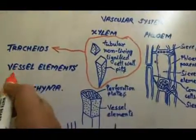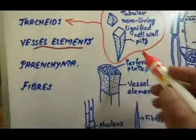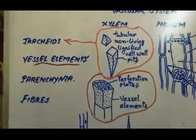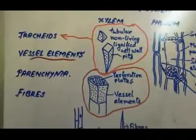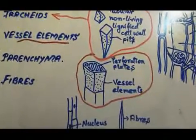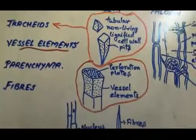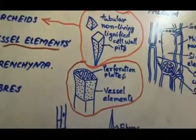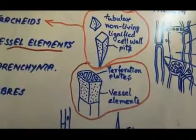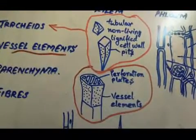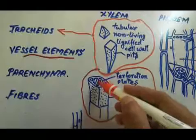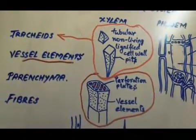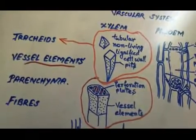Next, we shall come to the vessel elements. The vessel elements, as you can see in the diagram, are tube-like dead cells that are connected together end to end. They are wider and shorter than tracheids and form a long tube-like structure. The ends of these cells contain perforation plates which have a number of holes in the cell walls, as you can see in the figure. These perforation plates allow water and dissolved minerals to travel freely between the cells.